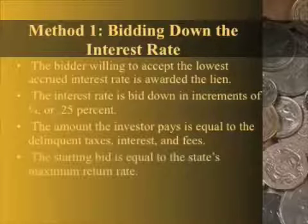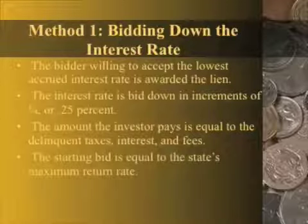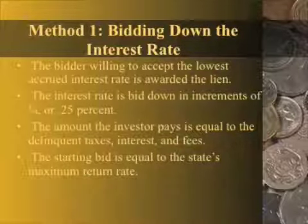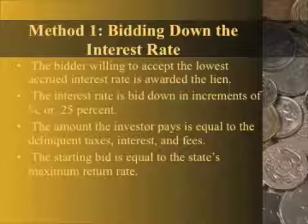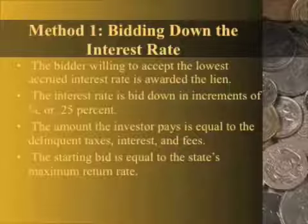The advantage of a system like this is that you're not paying an overbid. In other words, you're not paying anything over the amount of the tax lien along with any penalties or fees attached to it. The tax lien amount is the amount that you're paying — what's changing is the amount of money that you're going to make on that actual property.